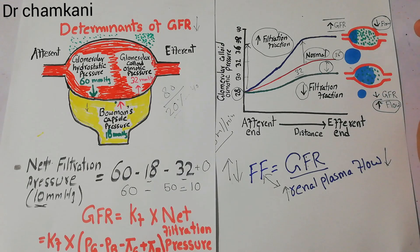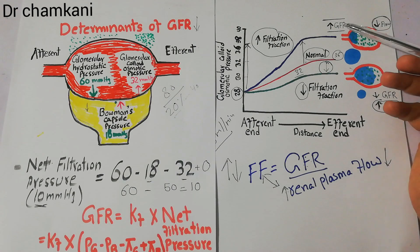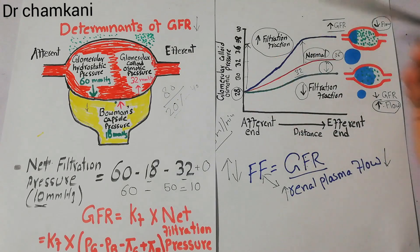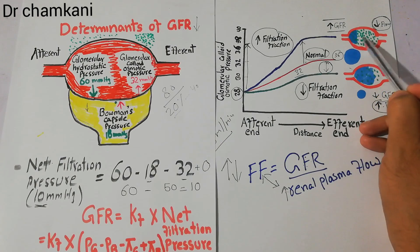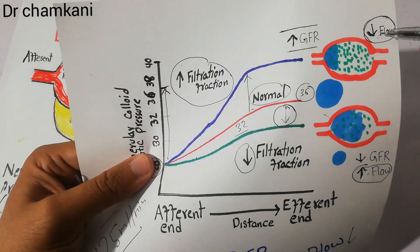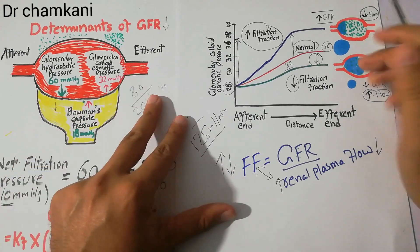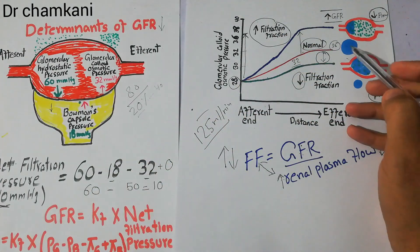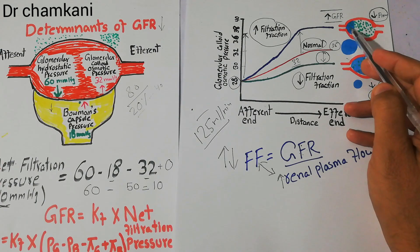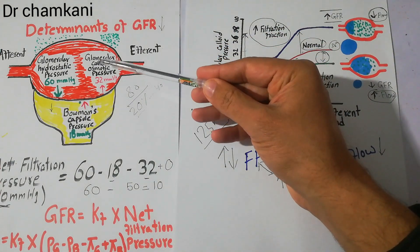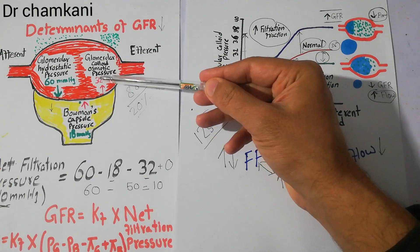The filtration fraction can be increased by either increasing the GFR or decreasing the plasma flow. If plasma flows slowly through the glomerular capillaries, the fraction that is filtered may increase from the normal 20% to around 40% or 50%. Due to this increased filtration fraction, protein concentration increases, which increases glomerular colloid osmotic pressure, and as a result the GFR decreases.